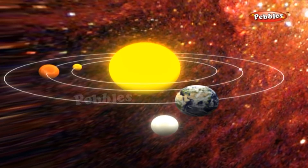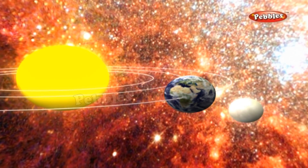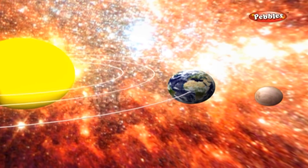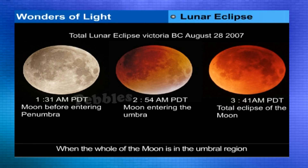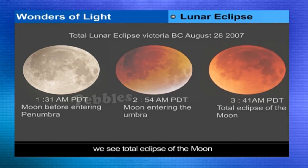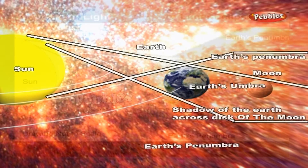Lunar eclipse: When the earth comes in between the sun and the moon, the shadow of the earth falls on the moon and a lunar eclipse occurs. The figure shows different positions of the moon during the period of eclipse. When the whole of the moon is in the umbral region, we see a total eclipse of the moon. When the moon is partly in the umbral and partly in the penumbra region, we see a partial eclipse. When the whole of the moon is in the penumbra region, the moon is not eclipsed at all.